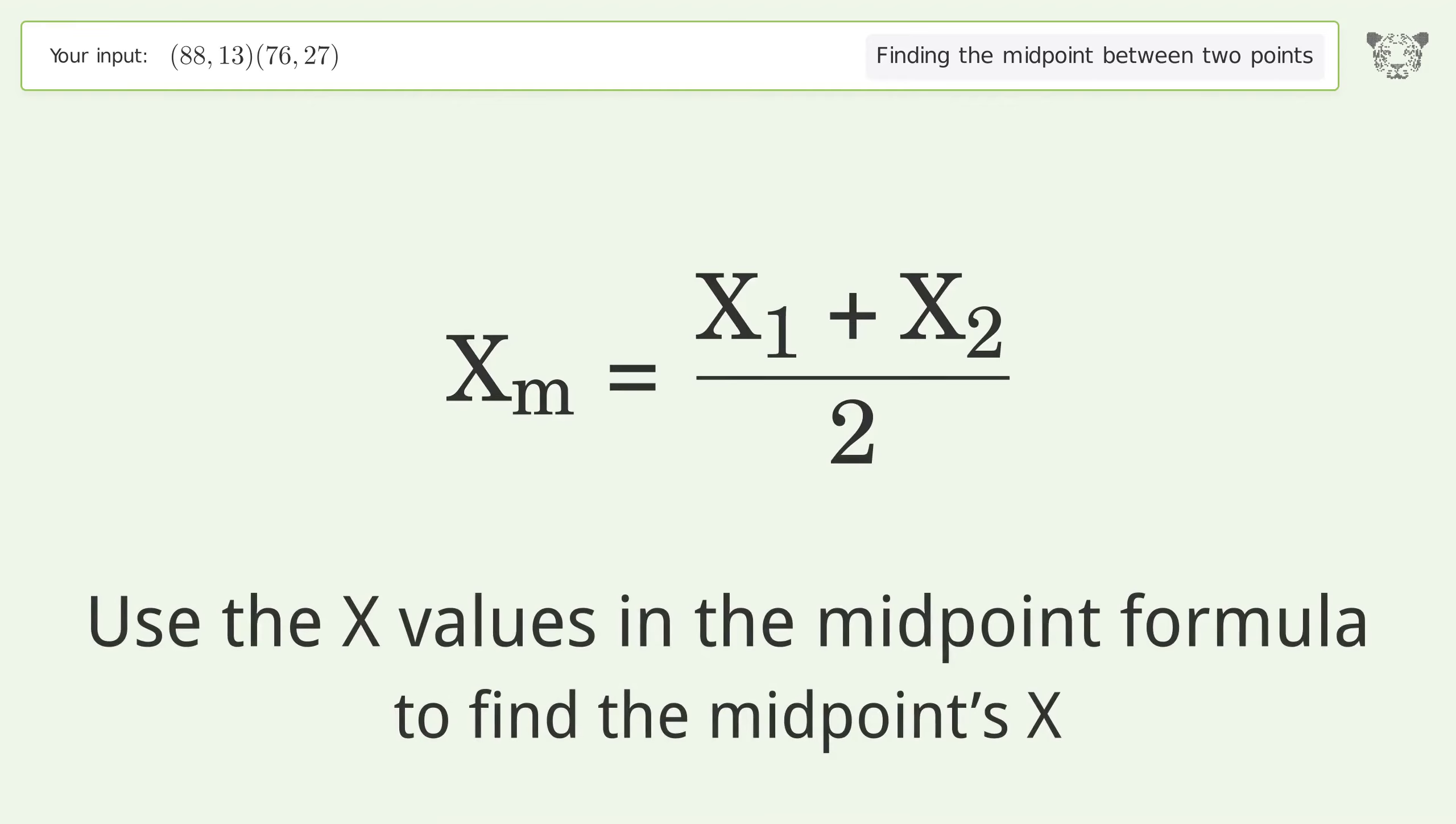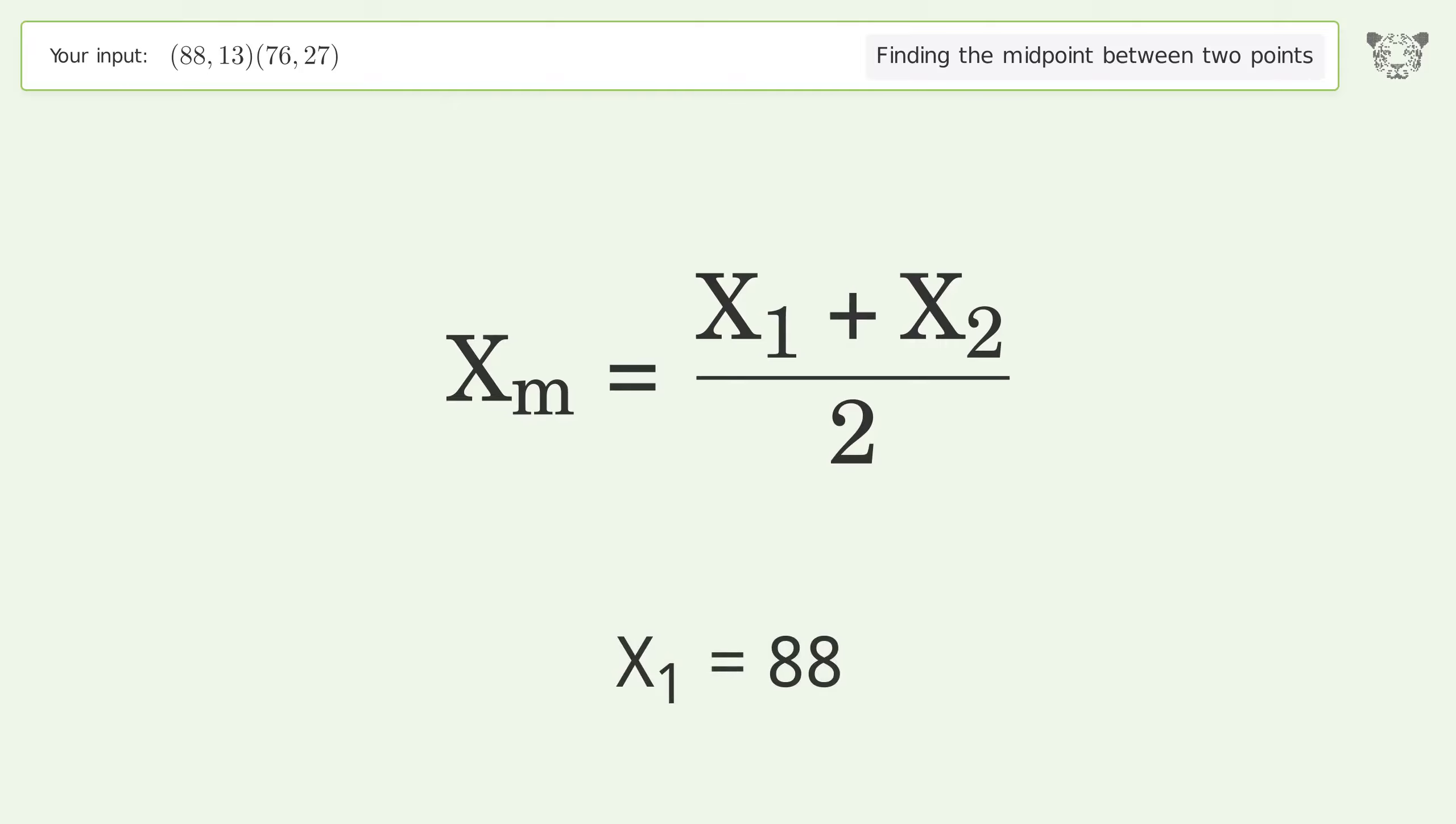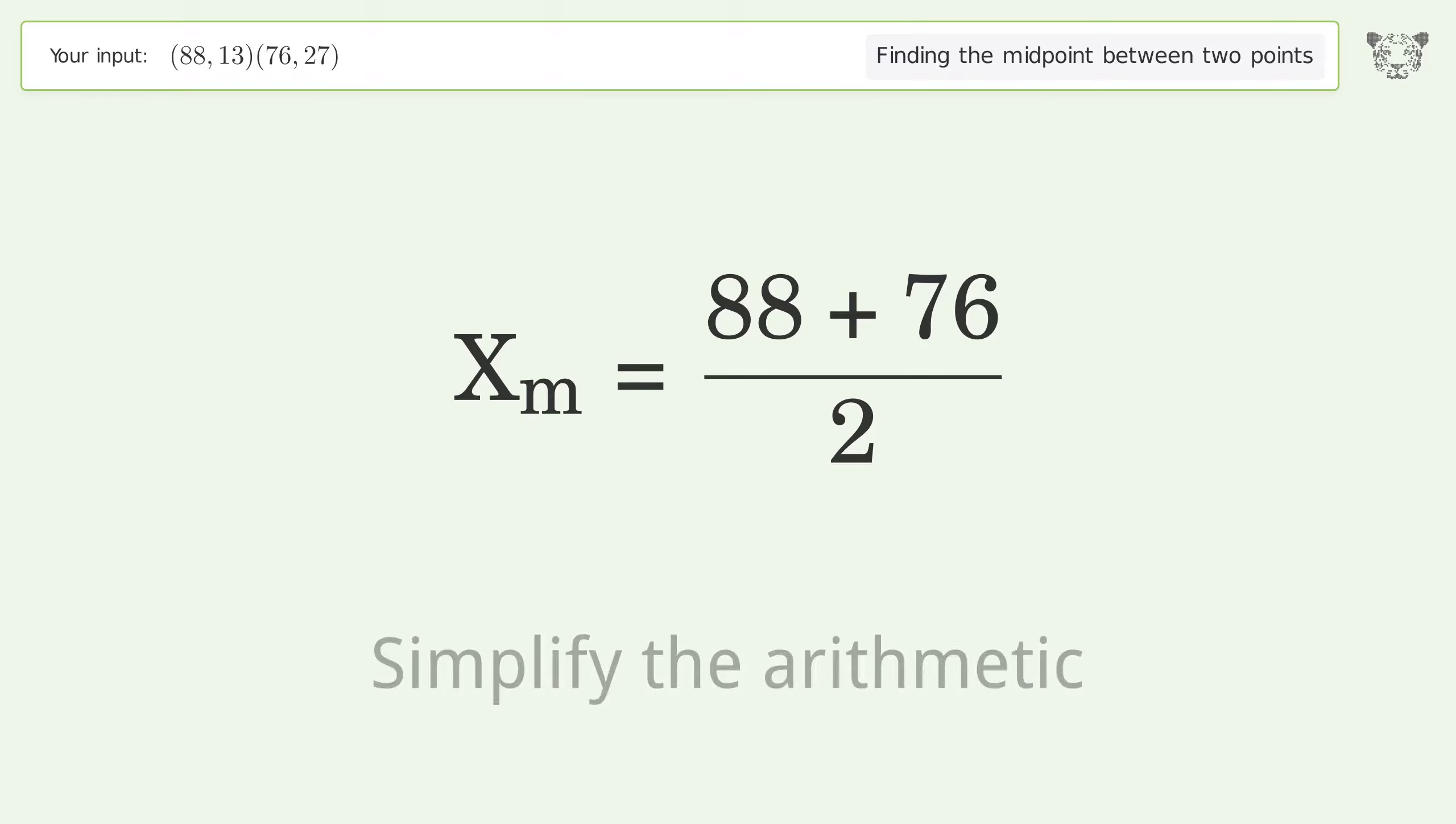Use the X values in the midpoint formula to find the midpoint's X. X1 equals 88, X2 equals 76. Simplify the arithmetic.